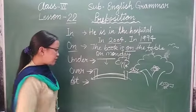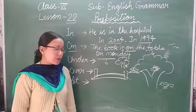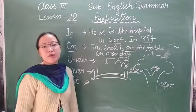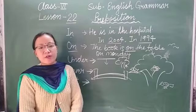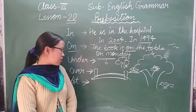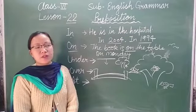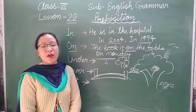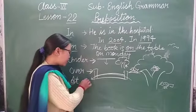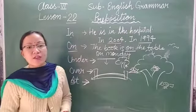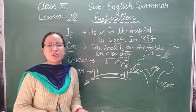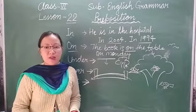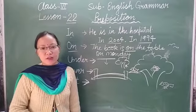Next preposition is 'at'. 'At' is used as a preposition of place. For example: 'He is standing at the bus stop' or 'He is at his home.' We use 'at' when someone is at a location but we cannot go inside it or on top of it — like standing at the bus stop.